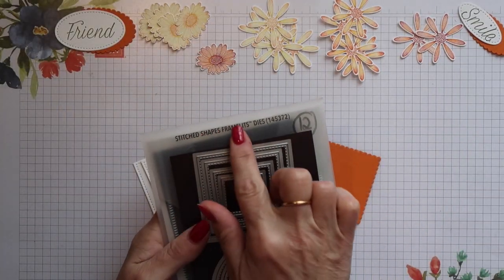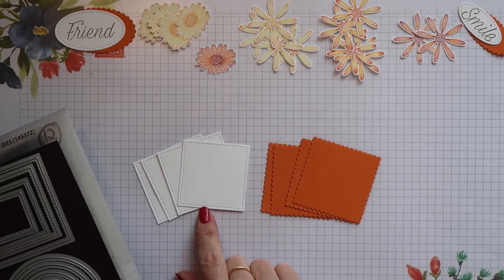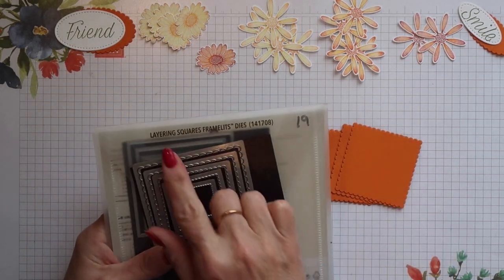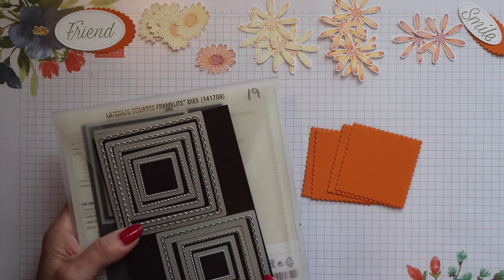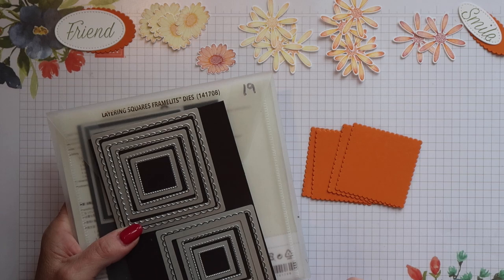I used one of the square stitched shapes framelits to create the white mattes for the panels. Then I used one of the layering square scallop framelits to create a Pumpkin Pie mat to go under each of them.